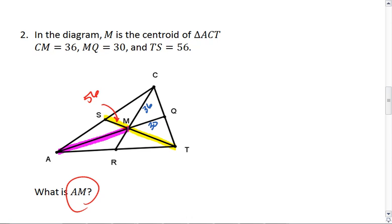AM is part of median AQ. We already know MQ is 30, and that's all we need to know. The distance from M the centroid to the side is half the distance from M to the vertex. Meaning, if MQ is 30, AM must be double that. It must be 60.